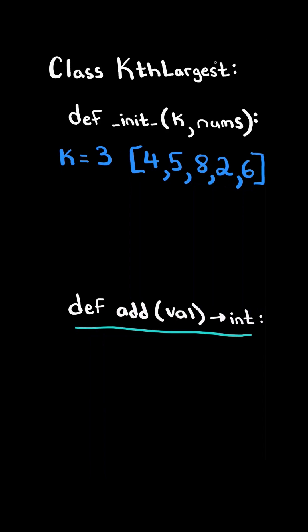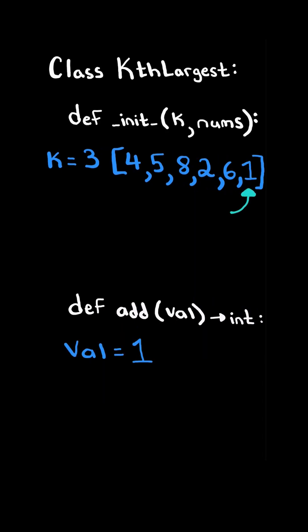Now the add method will take in a value. For example, assume the value is 1. We add the value to the list, and finally the add method should return the kth largest number. In this case, the kth largest number is 5.